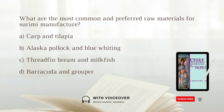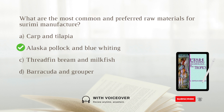What are the most common and preferred raw materials for surimi manufacture? A. Carp and tilapia. B. Alaska pollock and blue whiting. C. Threadfin bream and milkfish. D. Barracuda and grouper. Answer: B. Alaska pollock and blue whiting. Technically, any fish can be utilized for surimi production. However, white-fleshed marine fish such as Alaska pollock and blue whiting are the most common and preferred raw materials for surimi manufacture.